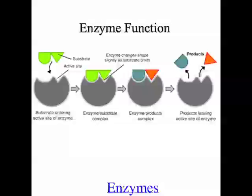Continuing on from the discussion about cells in Episode 2, the first thing I want to talk about in this episode is the role of enzymes in cells. There are heaps of chemical reactions that go on in our body, in the cells in our body, all the time. Sometimes these reactions don't go quite fast enough for our bodies to function properly, and this is where enzymes step in. Enzymes are proteins and they're biological catalysts, and that means they speed up the rate at which chemical reactions take place — sometimes millions of times faster.